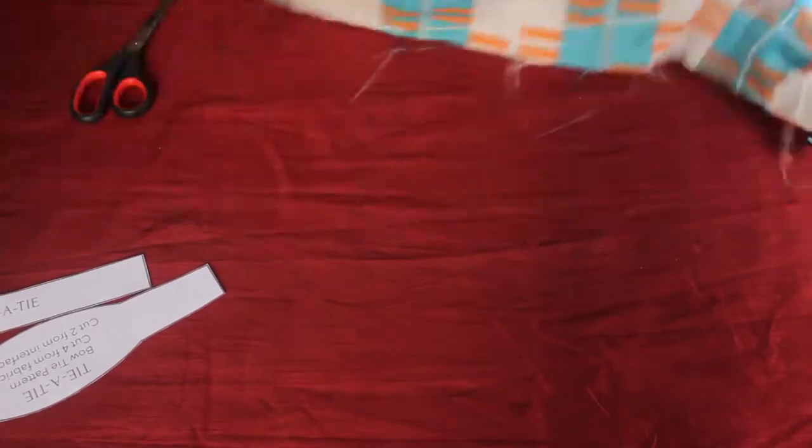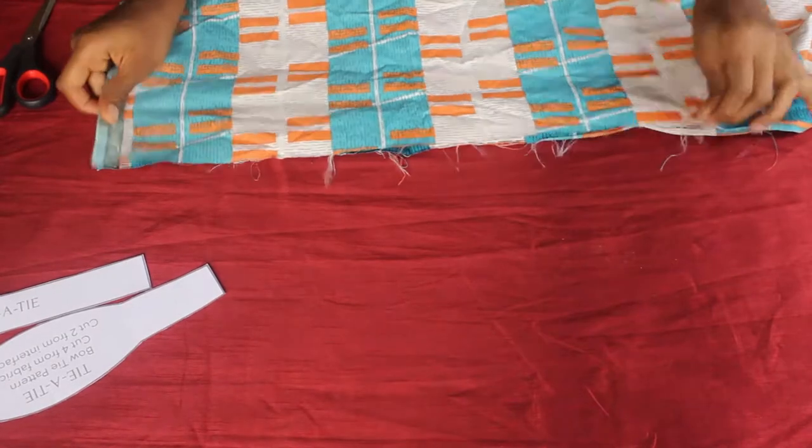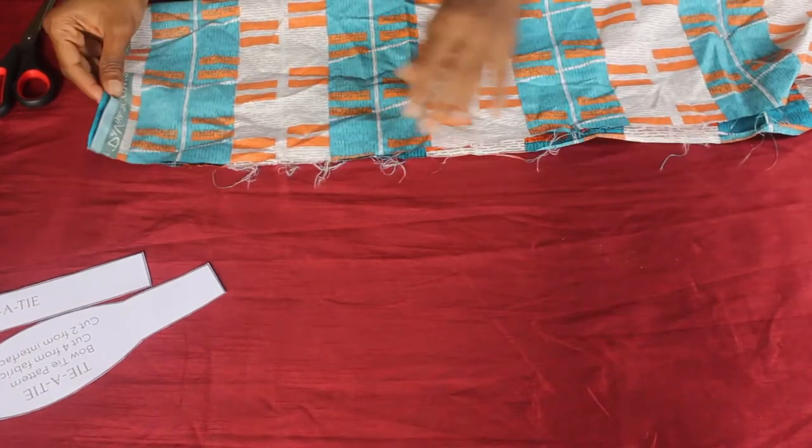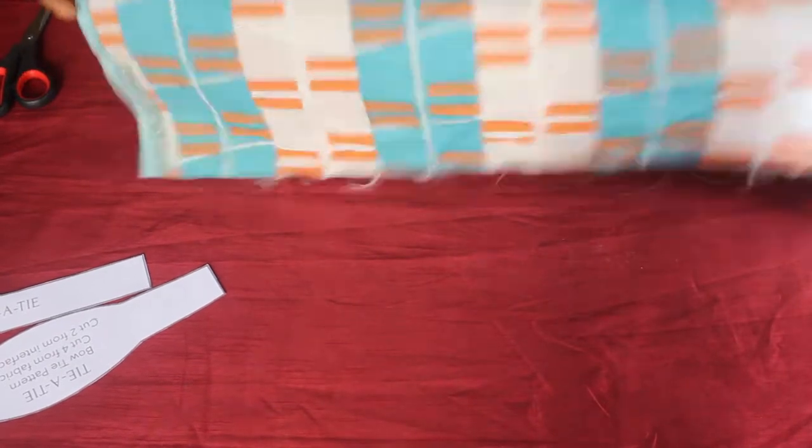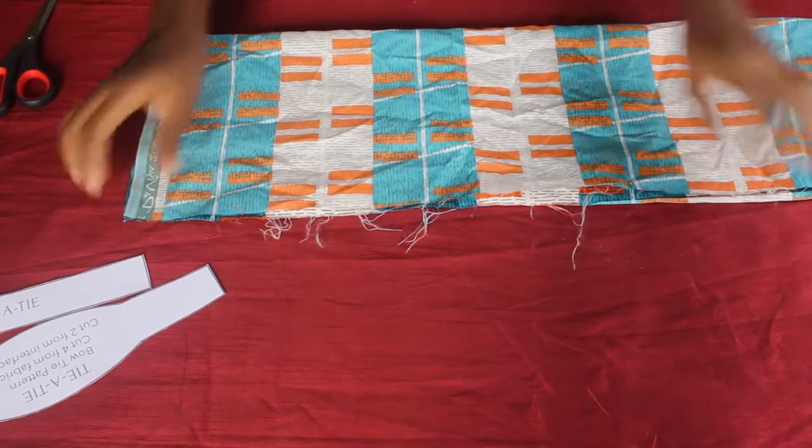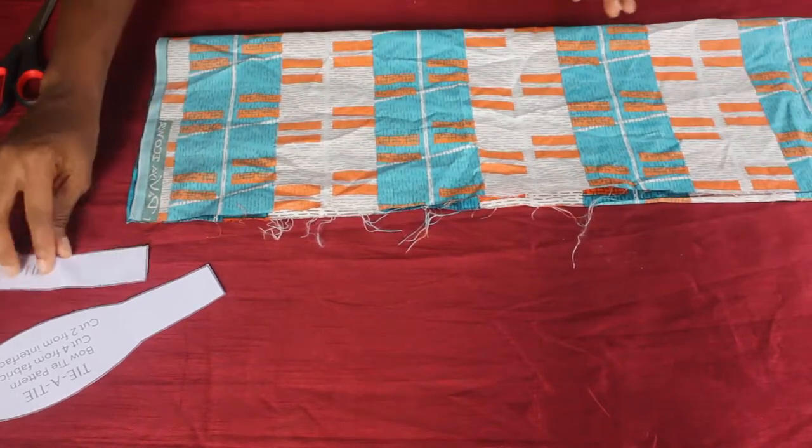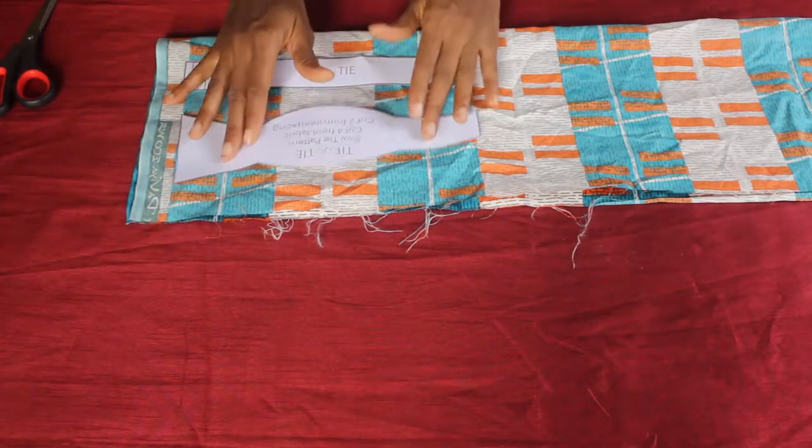So what you want to do is take the pattern paper and cut out four pieces each out of the fabric. You can choose to fold the fabric in four and cut out four pieces at once, but I'm folding it into two and cutting out two pieces first of each of the patterns, and then proceeding to cut out another two.